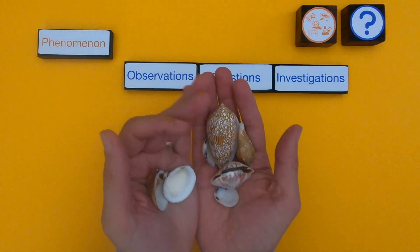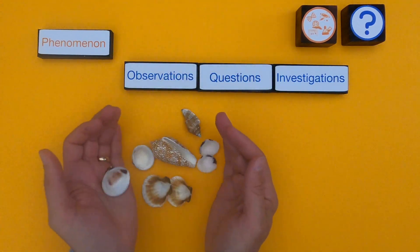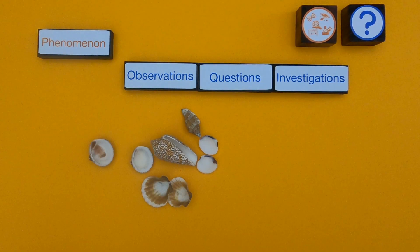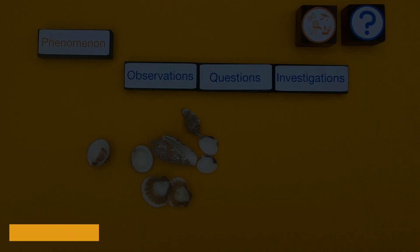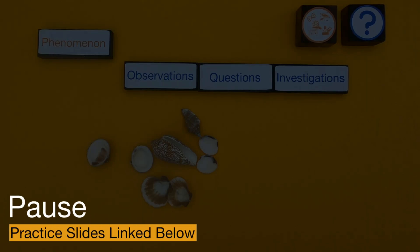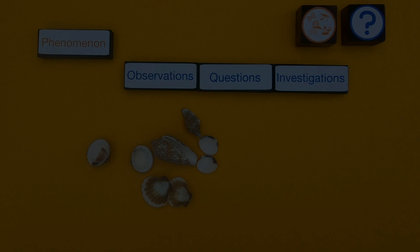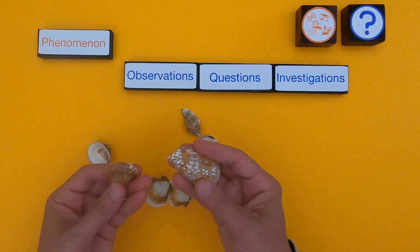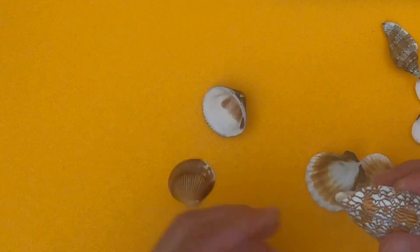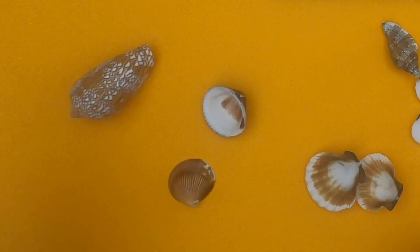Now we're going to ask some questions together. I've got some various seashells, and I'd love for you to do what we just did — make some observations, ask some questions, and then figure out which of those could be investigated. If you'd like, pause the video, use the slides below, then unpause and we'll see how our questions compare. It's hard to feel them in the video, but I'd look at the different seashells and use patterns to figure out what groups there are.